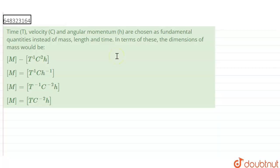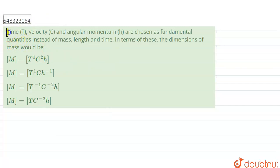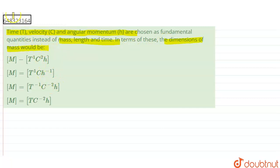Hi, so let's start the question. The question says: time t, velocity c and angular momentum h are chosen as fundamental quantities instead of mass, length and time. In terms of these, the dimensions of mass would be. So we have to find the dimension of mass.